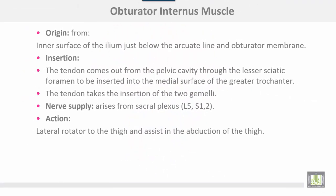Obturator internus muscle: origin from the inner surface of the ilium just below the arcuate line and the obturator membrane. The tendon comes out from the pelvic cavity through the lesser sciatic foramen to be inserted into the medial surface of the greater trochanter. The tendon also takes the insertion of the two gemelli muscles. Nerve supply from the sacral plexus L5, S1 and S2. Action: lateral rotator of the thigh and assists in abduction of the thigh.